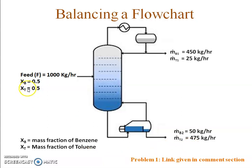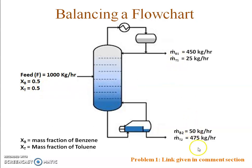A flowchart is balanced in terms of material: what is going in is coming out. You can check it for the overall material balance as well as the component balances — whatever amount of benzene is going in is also coming out. This is a balanced flowchart, and it is very powerful.